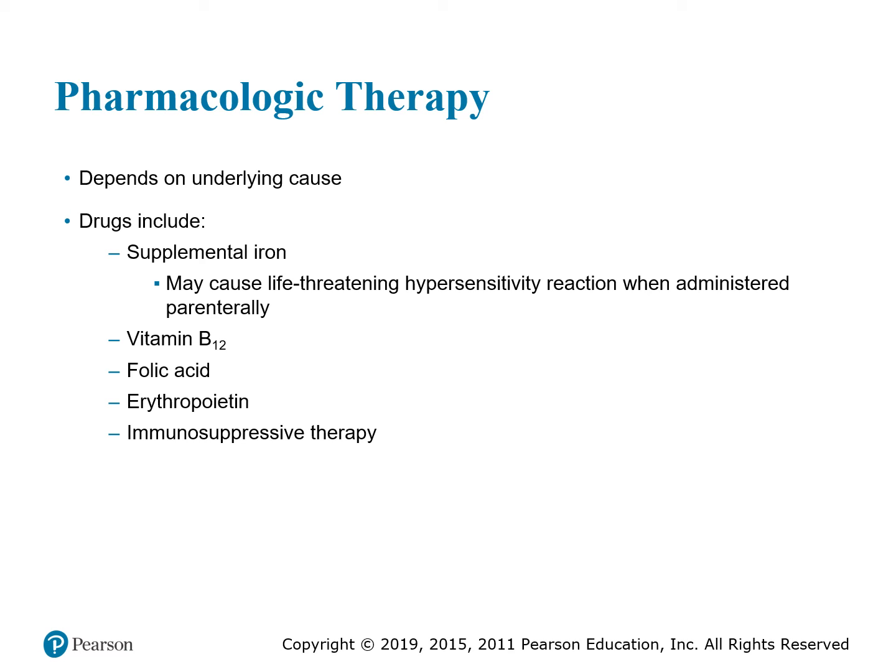For pharmacologic therapy, treatment depends on the cause. You may supplement with iron, but be careful because some people are allergic to iron and have a hypersensitivity reaction. Iron levels must be drawn when on iron therapy. Teach patients that iron can stain teeth and cause black, tarry stools and constipation. Vitamin B12 is given as an IM injection once a month, usually in the deltoid. Other therapies include folic acid replacement, erythropoietin injections, and immunosuppressive therapy — which may be used to treat aplastic anemia and stimulate blood cell production.